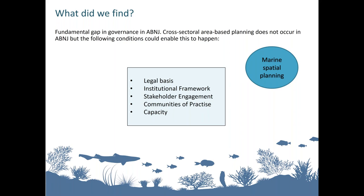Firstly, legal basis: the United Nations Convention on the Law of the Sea, UNCLOS, sets out general environmental obligations and provides an overarching framework under which area-based planning for the conservation and sustainable use of biodiversity in ABNJ may occur. However, it doesn't provide a clear mechanism for marine spatial planning specifically. A new implementing agreement for BBNJ could provide a direct vehicle through which state implementation and compliance with the general obligations set out under UNCLOS could be monitored.